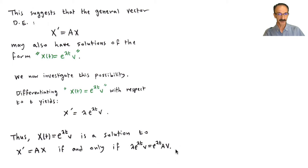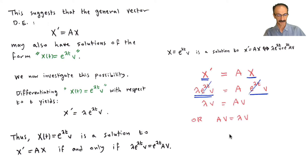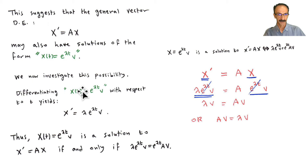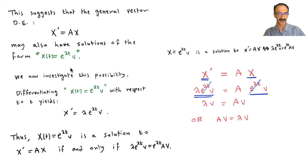Let me slow down and show this step by step. From x' = Ax, finding the derivative of x gives x'. Lambda goes up front; A stays as is. Replacing x with e^(λt)v and simplifying, we get λv = Av.